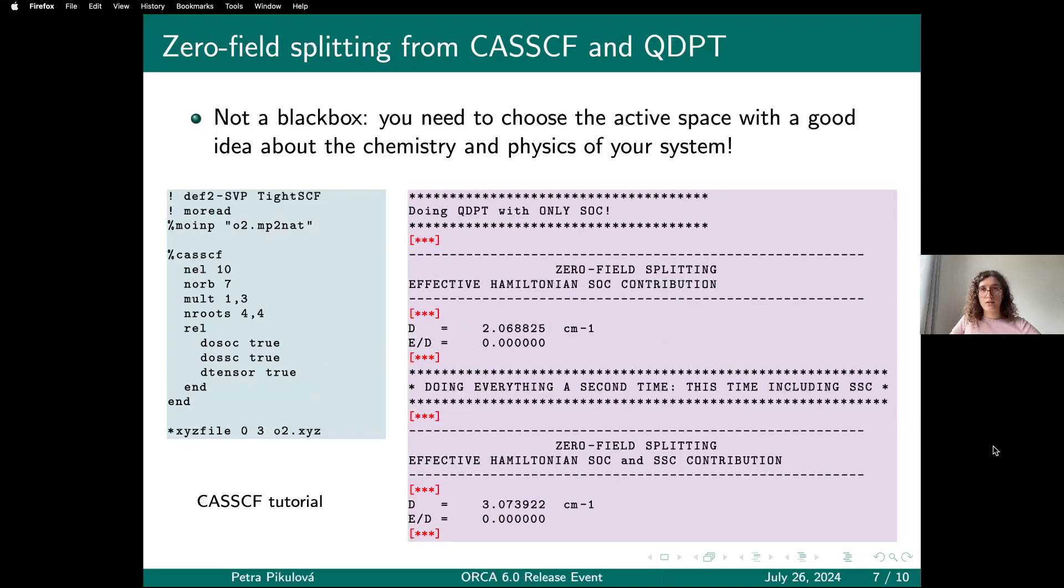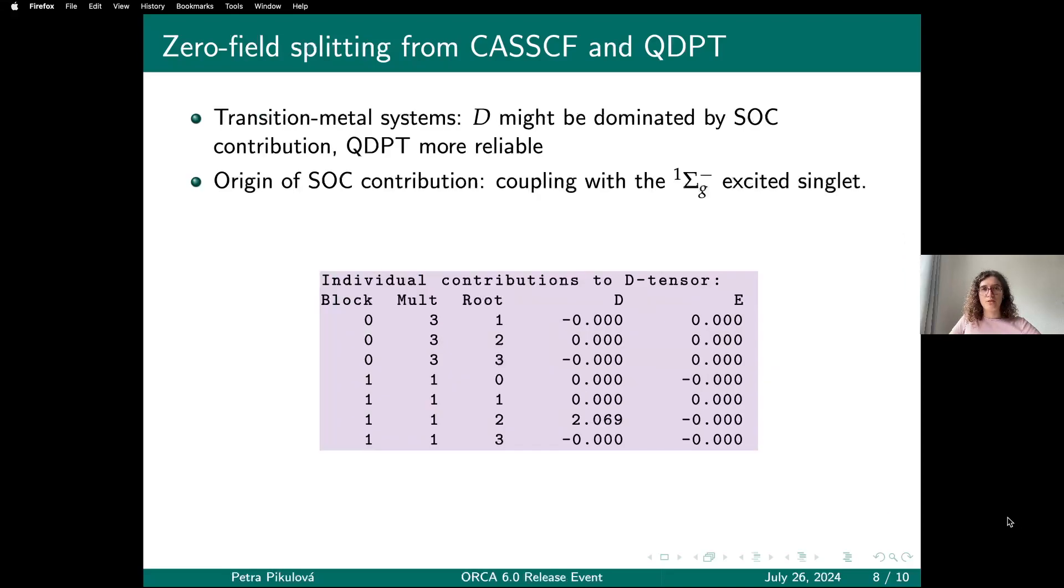In the output, the program does the QDPT calculation only including spin-orbit coupling and gives you the property, then it does the QDPT calculation again including both spin-orbit and spin-spin coupling and gives you the property again. You can see the number changed quite a bit, so in this case both of these contributions are important.